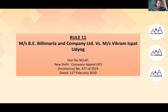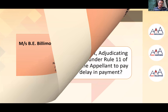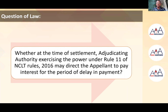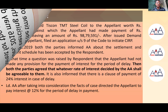The second judgment is B.E. Billy Moria and Company Limited versus Mikram Ispat Limited — an NCLT judgment from February 2020. The question of law was whether, at the time of settlement, the adjudicating authority exercising powers under Rule 11 of NCLT Rules may direct the appellant to pay interest for the period of delay in payment.